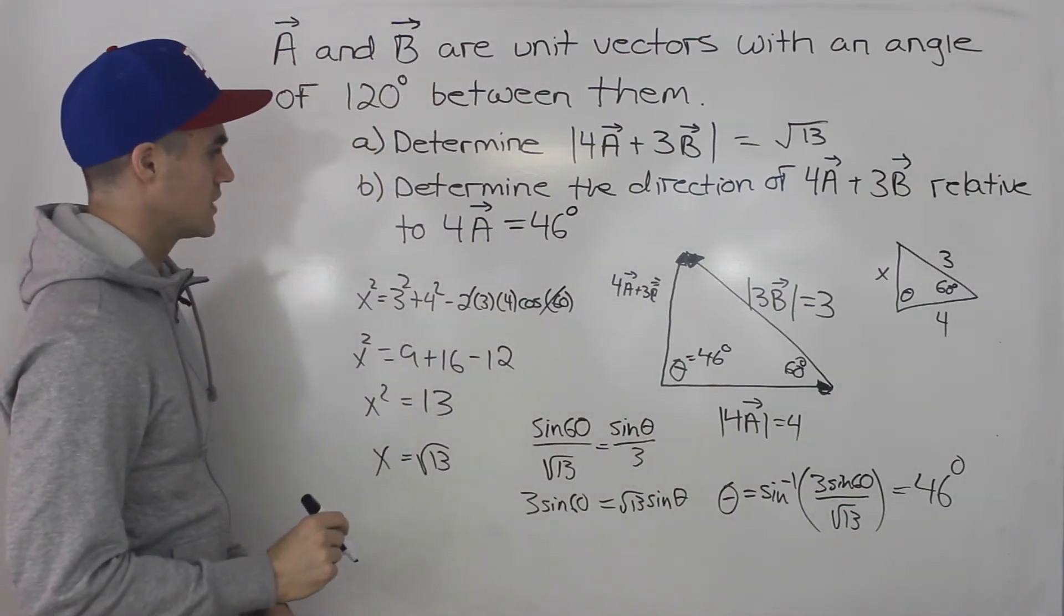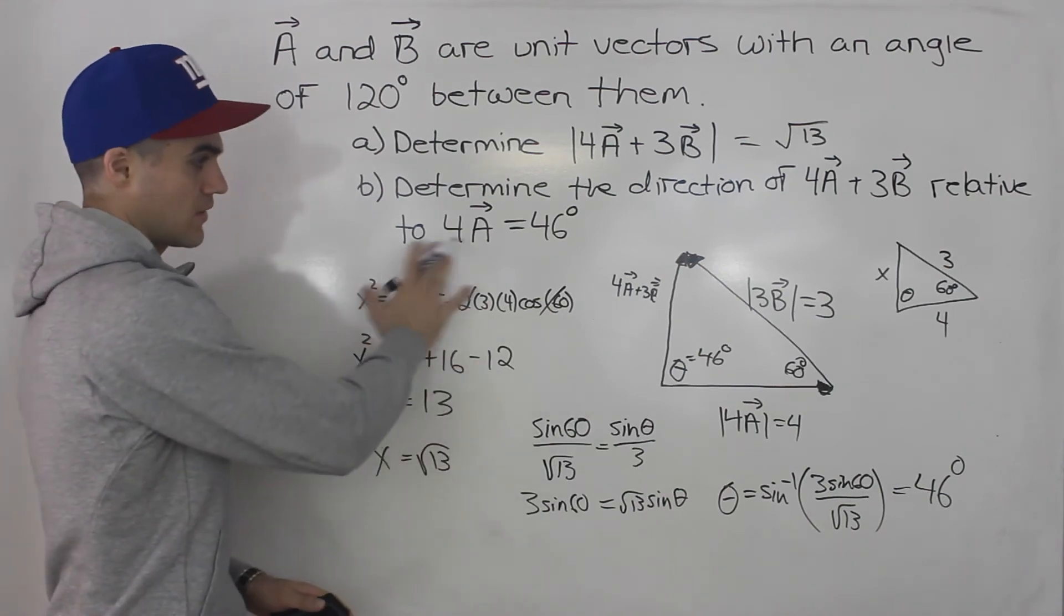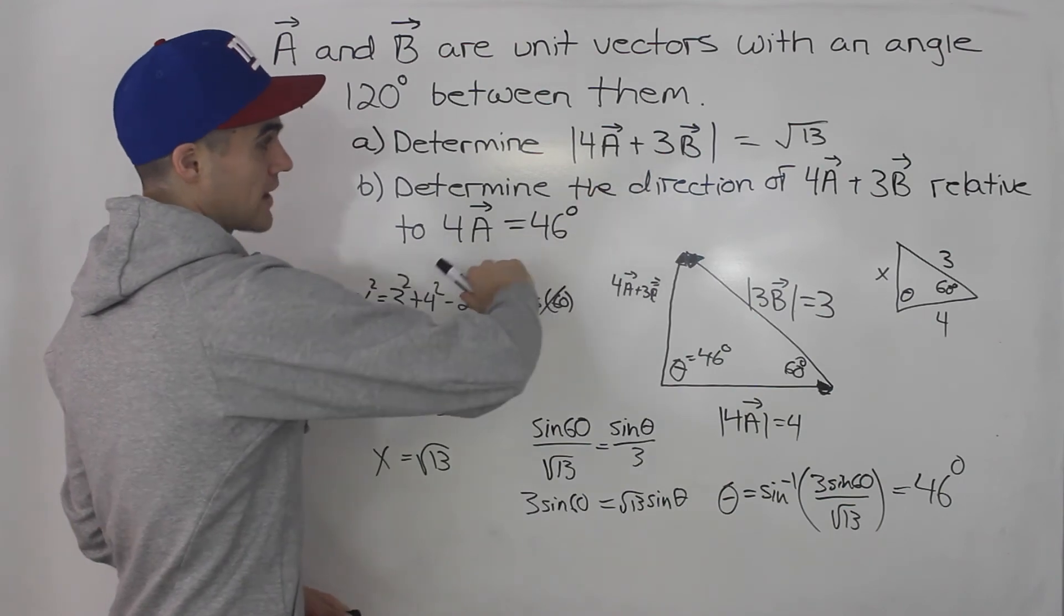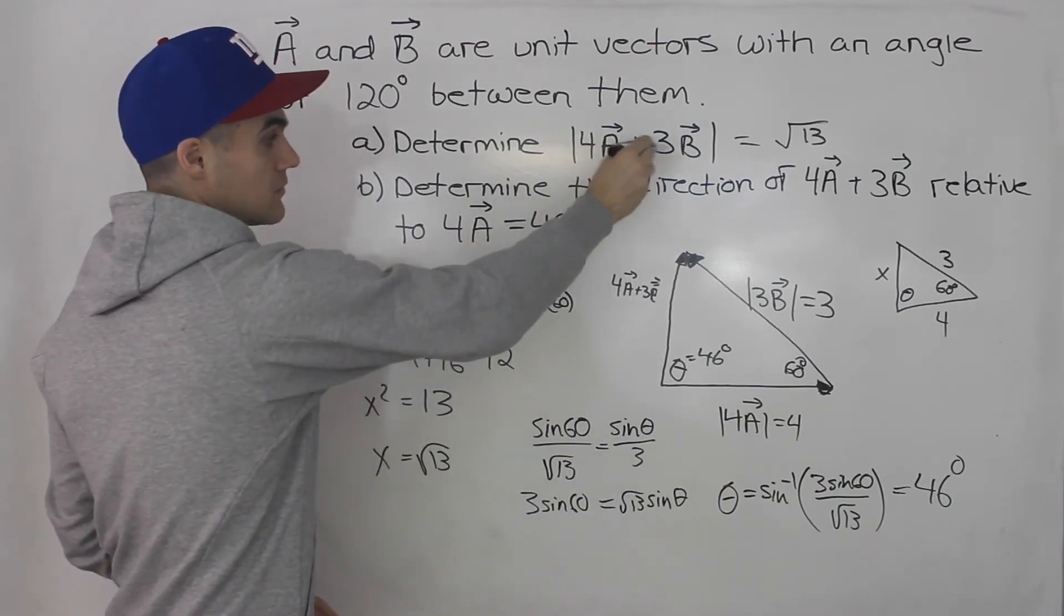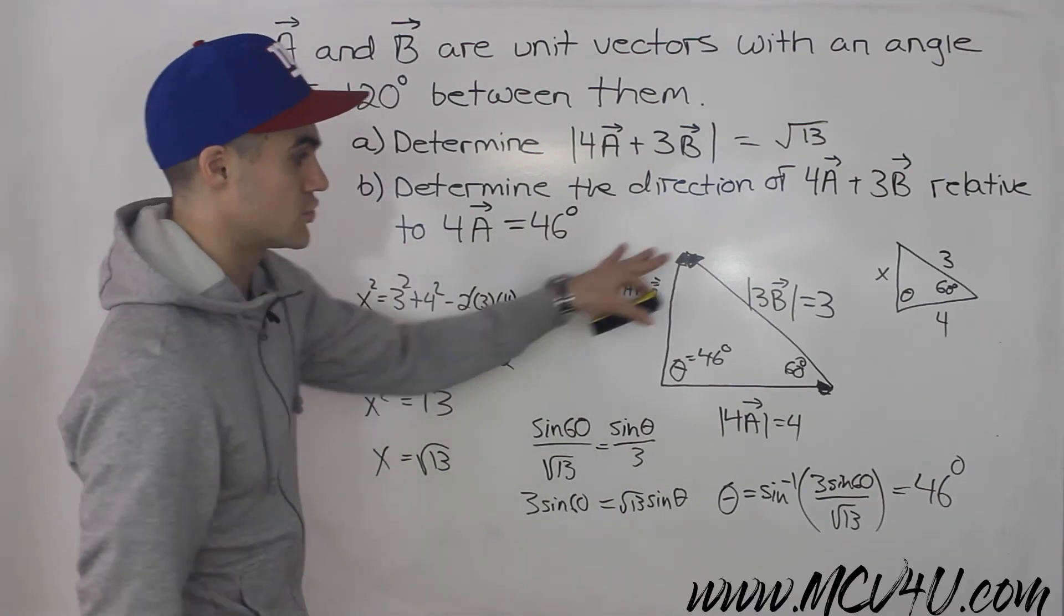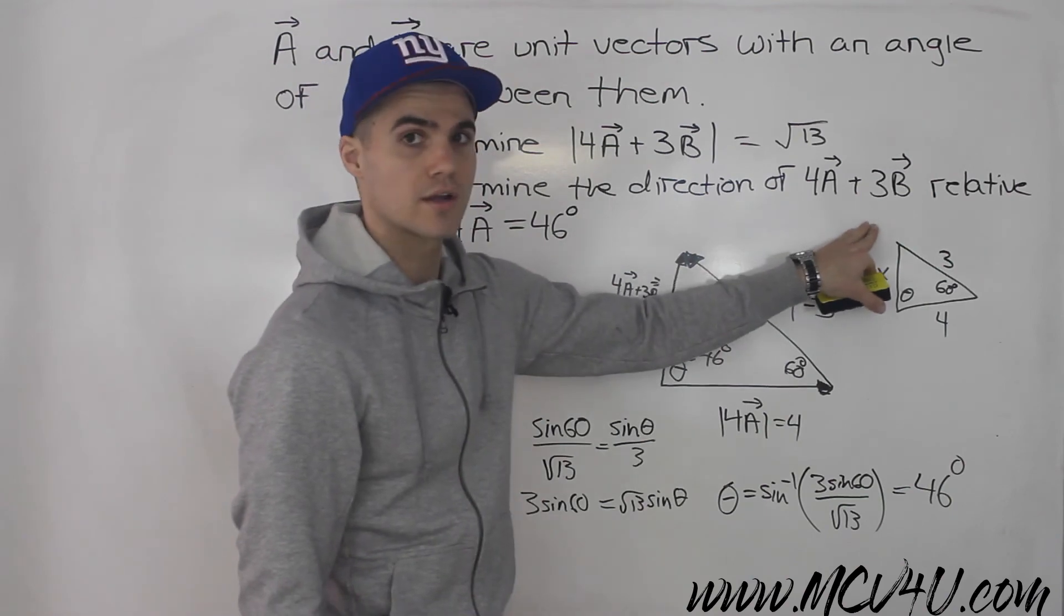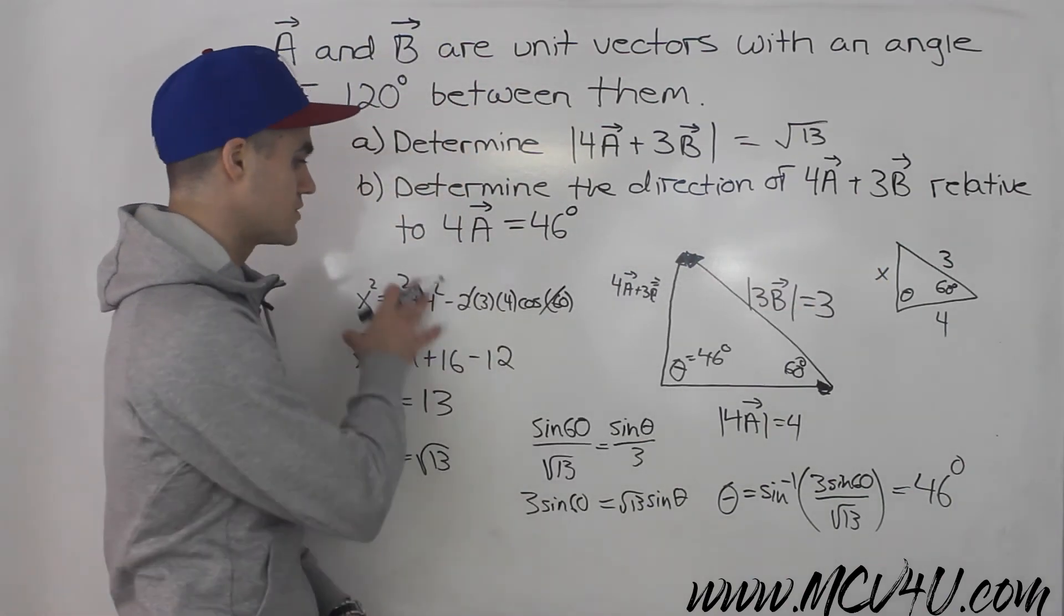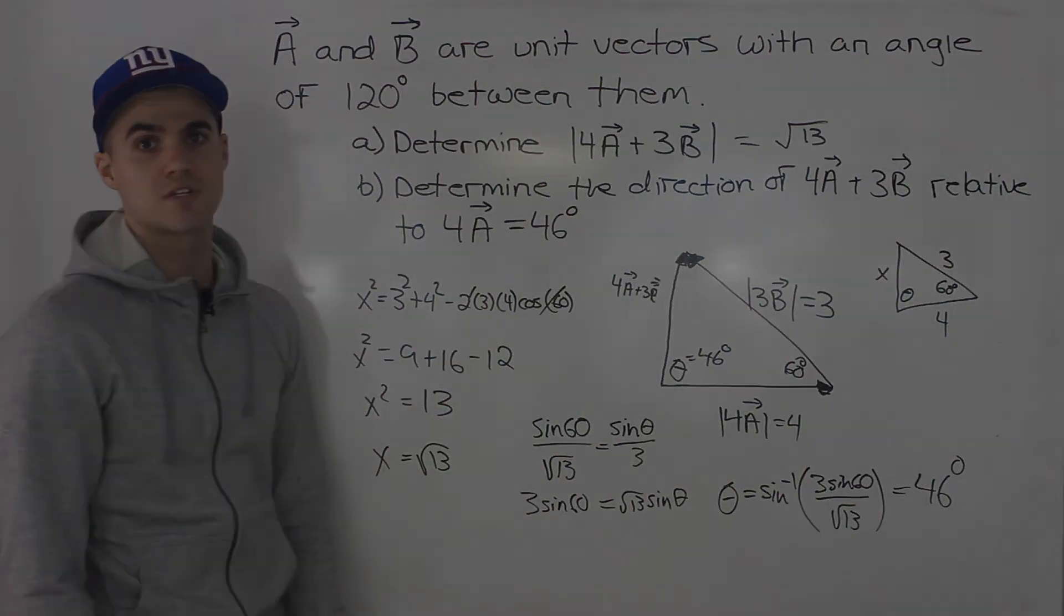So when you get a question like this, what you want to do is you want to first draw out the two unit vectors. And then depending on what you're doing, whether you're adding them or subtracting them, or you are multiplying them by certain scalars, you want to draw out that new triangle you're working with. And then maybe draw out a smaller triangle so you could just see it better. And then, usually you're using cosine law and sine law to solve for that magnitude and direction respectively.